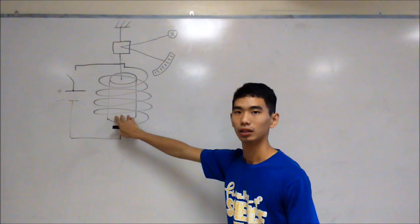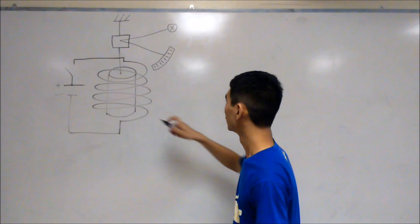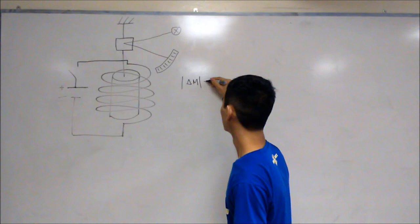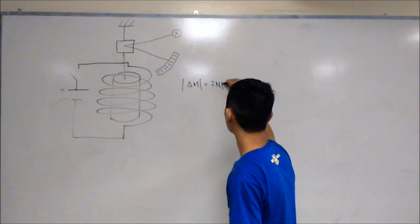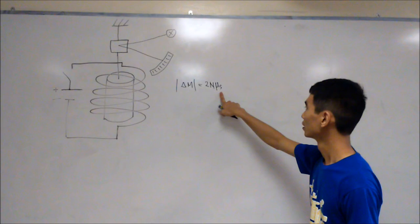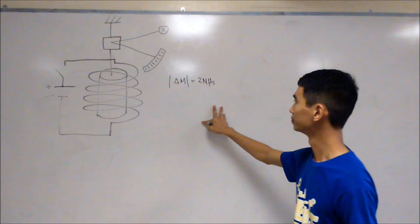And this change in magnetization of the bar magnet can be described by the following equation. The change in magnetization will be equal to 2 times n times the magnetic moment of each electron. The n refers to the total number of free electrons that can rotate in this magnet.